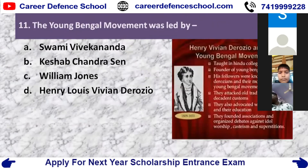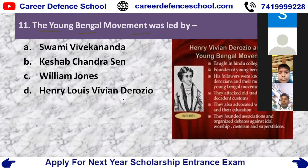The Young Bengal Movement was led by — Swami Vivekananda, Keshav Chandra Sen, William Jones, or Henry Louis Vivian Derozio? The correct answer is Option D — Henry Louis Vivian Derozio. This movement was launched in Calcutta.